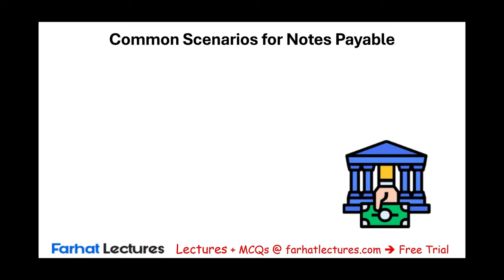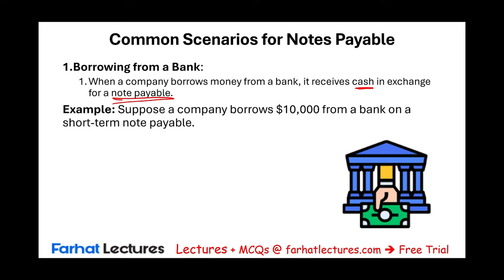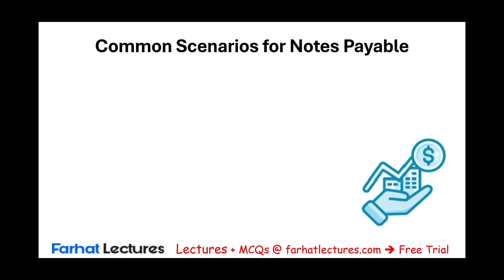Let's start with common scenarios on how notes payable are created. The first classic scenario is borrowing money from the bank. When a company borrows money from a bank it receives cash and signs a note — a promise to pay. For example, a company borrows $10,000 from a bank: we debit cash and credit notes payable, creating a liability.